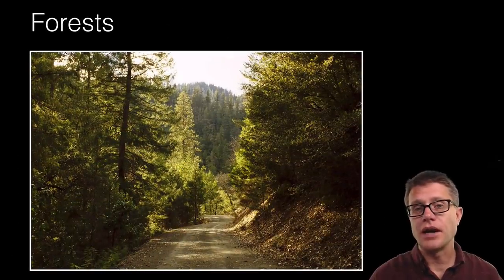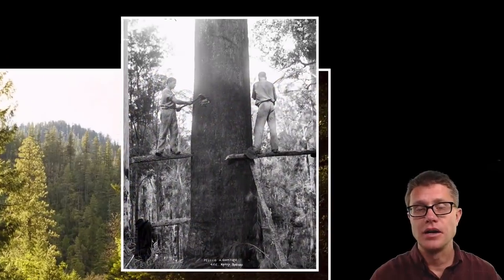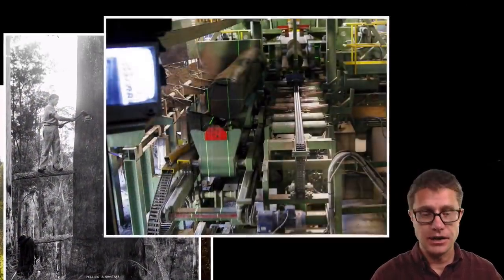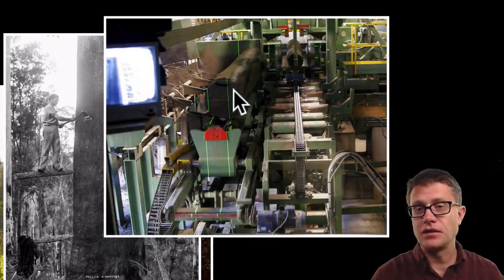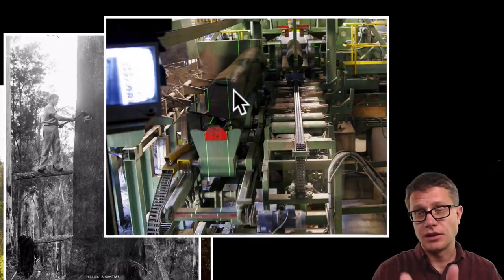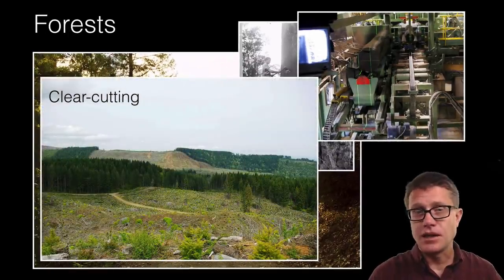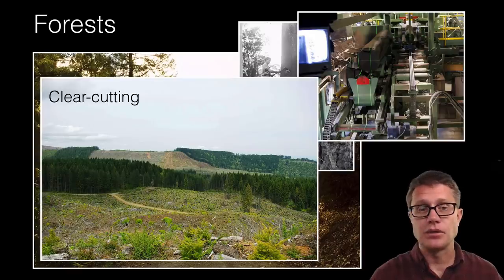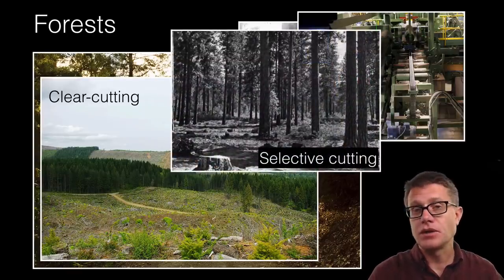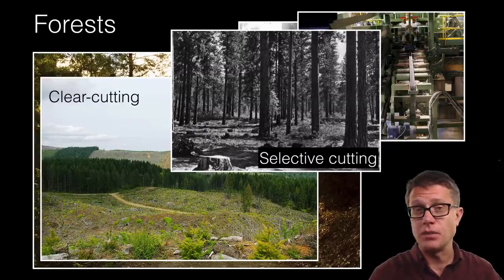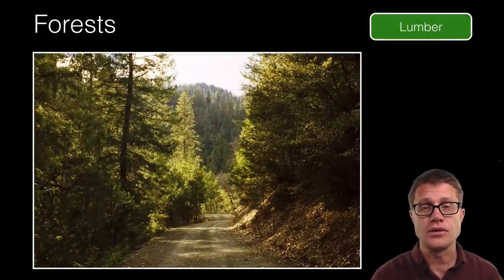Forests provide lumber for us, and while we have this quaint view of a logger with an axe cutting down a tree, like everything it has been highly industrialized. This is a sawmill feeding wood through, using lasers to get the optimum amount of lumber out. Techniques used include clear cutting — removing all trees and replanting with a tree plantation — and also selective cutting, where we remove just specific trees. That costs more money but may be healthier for the forest.